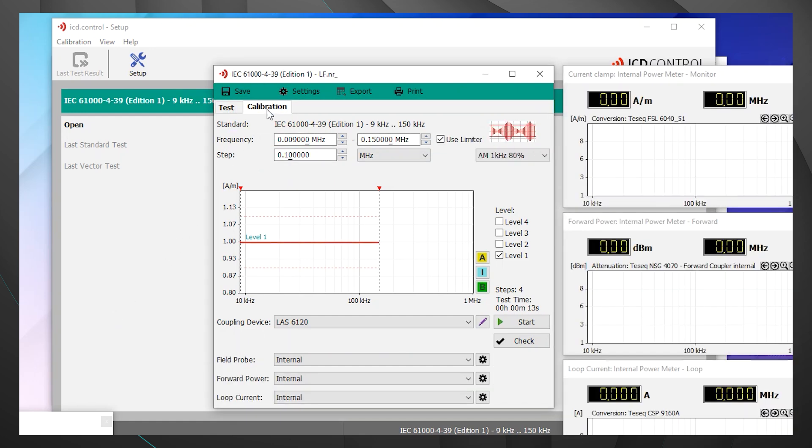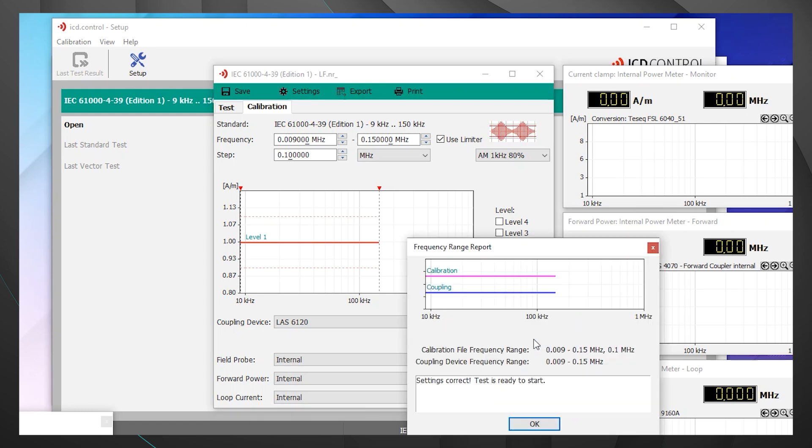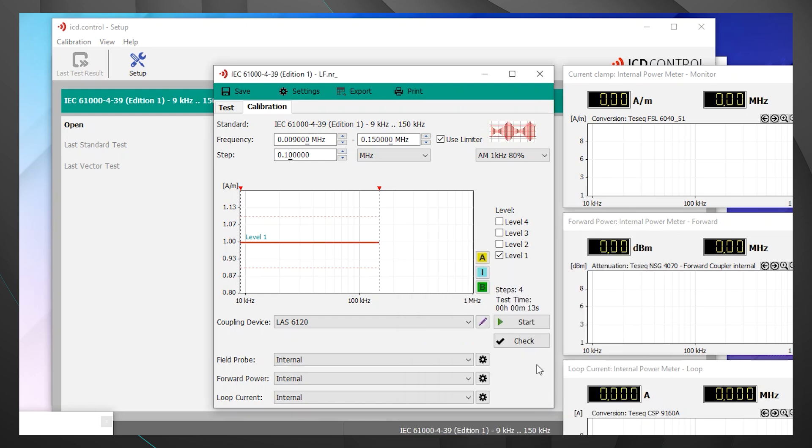Looking at the calibration information here, we have our frequency entered. We have adjusted this step slightly just to allow for a faster calibration for today's video. We kept the default modulation as well as the other criteria in this menu. Now let's look in the bottom right corner. There you'll see the start, and then below that, check. If you click that check, it's going to verify your setup. Just like that, you'll see a pop-up box at the bottom: Settings are correct, test is ready to start. So now let's run our calibration.